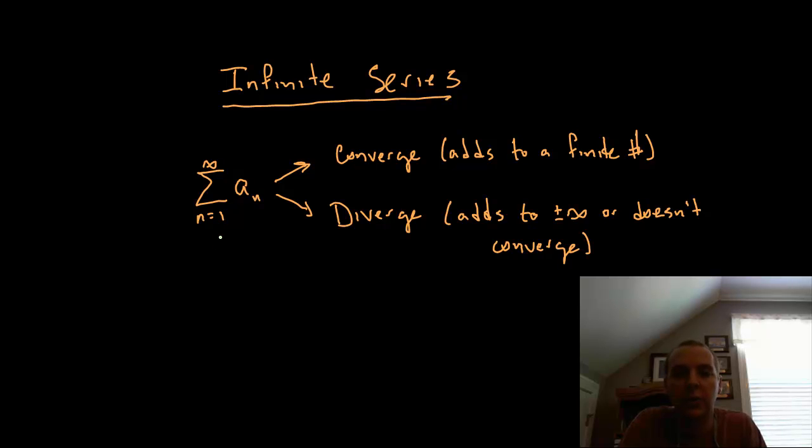I assume most of us probably know at this point that this series is a shorthand notation for an actual sum of terms where you start with the beginning number here, in this case 1. You would plug that into the function of n. Typically it would actually be a function of n, not just written a sub n, and then you continually add the next term and the next term and the next term until you get to the number that's in the top of the sigma symbol.